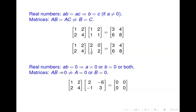Another warning: for real numbers, if A times B equals 0, you can assume that either A or B equals 0. That's not true for matrices. If a product of two matrices equals the zero matrix, that doesn't mean that A or B is equal to the zero matrix. Here's an example where A times B gives the zero matrix, but neither A nor B is anywhere close to the zero matrix.